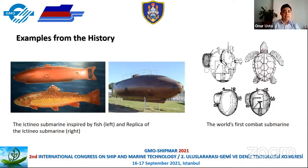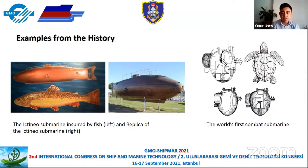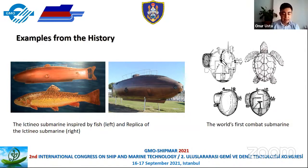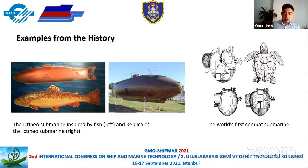Here you see some examples from history. On the left-hand side you see the H.L. Hunley submarine, which was inspired by fish, and a replica of that submarine. On the right-hand side you see the world's first combat submarine, also the first American military submarine, named Turtle. It was built in 1776, and the name Turtle was given because it resembled two upper tortoise shells of equal size joined together.